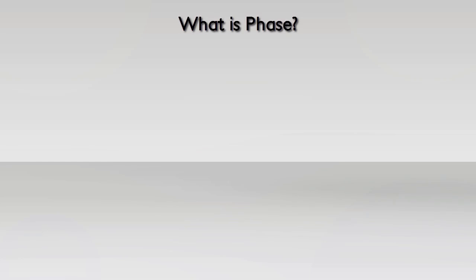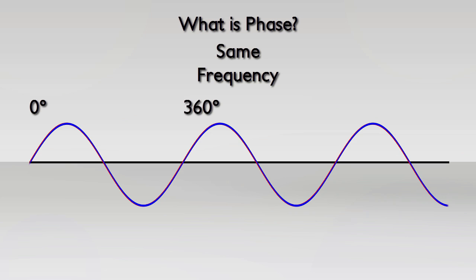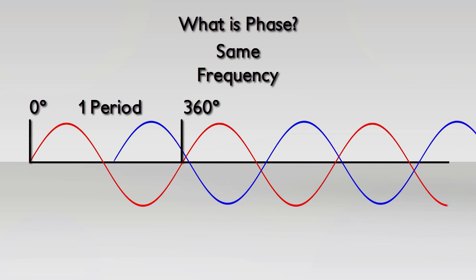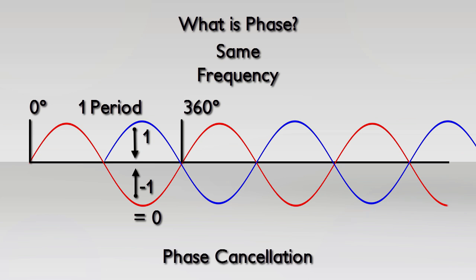Let's start with a more fundamental question: what is phase? The word phase describes the actual position of a periodic process, for example a sine wave. A possible phase offset between two waves with the exact same frequency can be described between 0 and 360 degrees within a period. If two sine waves with a phase offset are mixed together, they cancel each other out. This phenomenon is called phase cancellation.